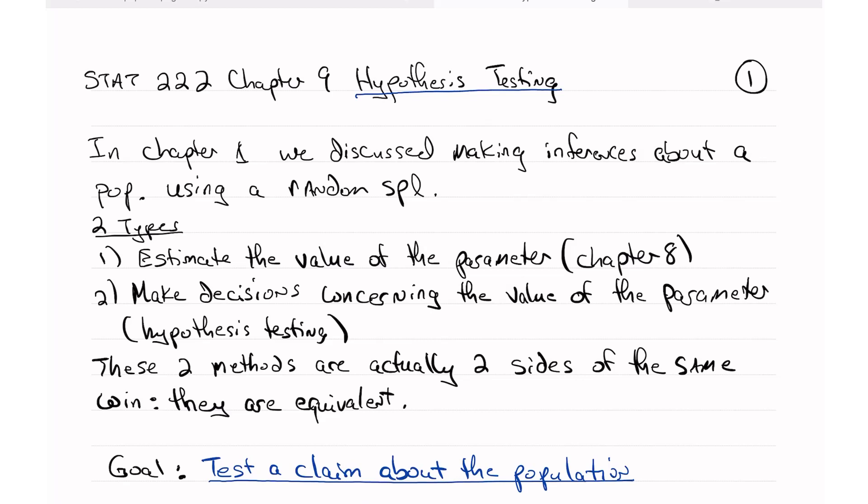There are two major types of inferences that we can make. So what we did in chapter 8 is we estimated the value of the parameter, and we did this using a confidence interval.